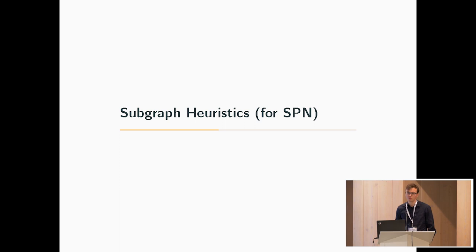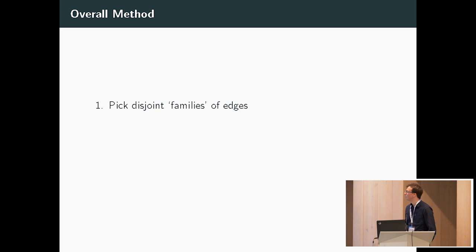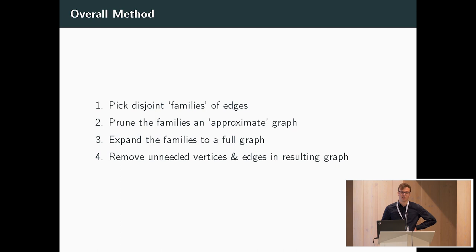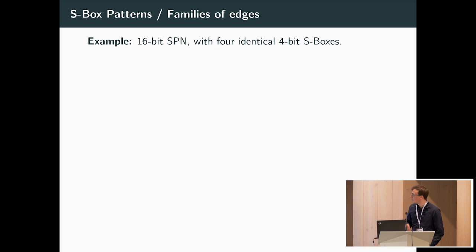For this we have devised some heuristics, focusing primarily on SPNs for which we have the best results. The overall method is: we pick some disjoint families of edges, then prune the families using an approximation of the graph defined by these edges, then expand the families to a full graph, and finally do some cleanup work. One immediate observation: any edge of length zero can be removed, as it corresponds to a trail with length zero and doesn't contribute to the hull. Once removed, we can remove any vertex that doesn't have a predecessor or successor because no path can traverse it.